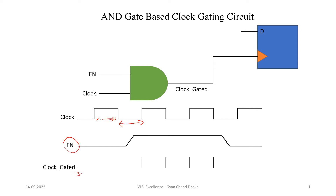Now the further restriction on the enable signal is: during the time period when the clock signal is low, in which window can the enable signal toggle? Because if the enable signal toggles near the rising edge of the clock signal, our clock gated output can still be glitchy. This is because the clock gated output also depends on the internal delay of these cells — the AND gate cell in the case of an AND gate based clock gating circuit. So the first restriction is that the enable signal should only toggle when the clock signal is low.